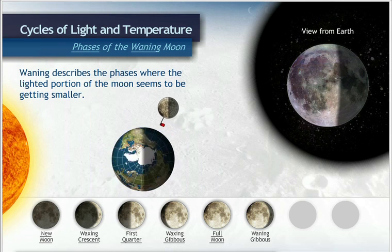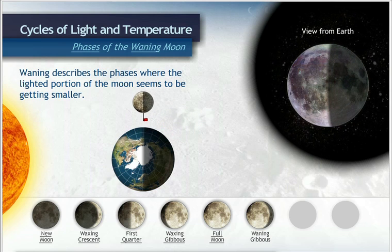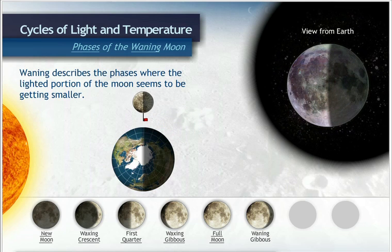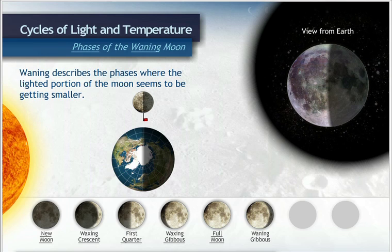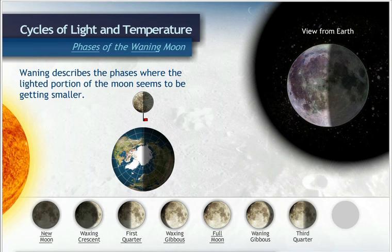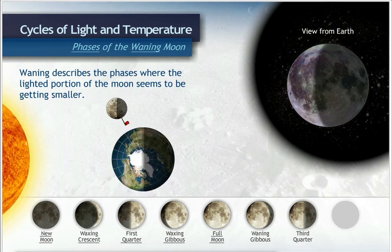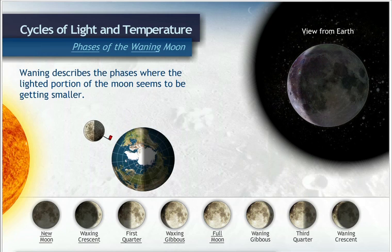When the moon has completed three quarters of its phases, its left half is visible to us, but the right half is dark. This is called a third quarter moon. The phase after third quarter is called waning crescent.